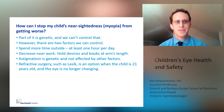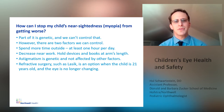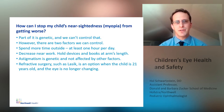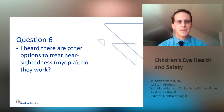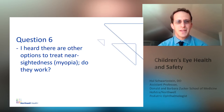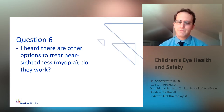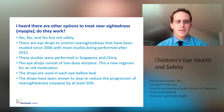Refractive surgery, such as LASIK, is an option when the child is 21 years old and the eye is no longer changing. Question six: I heard there are other options to treat nearsightedness — do they work? Yes, no, and yes but not safely.